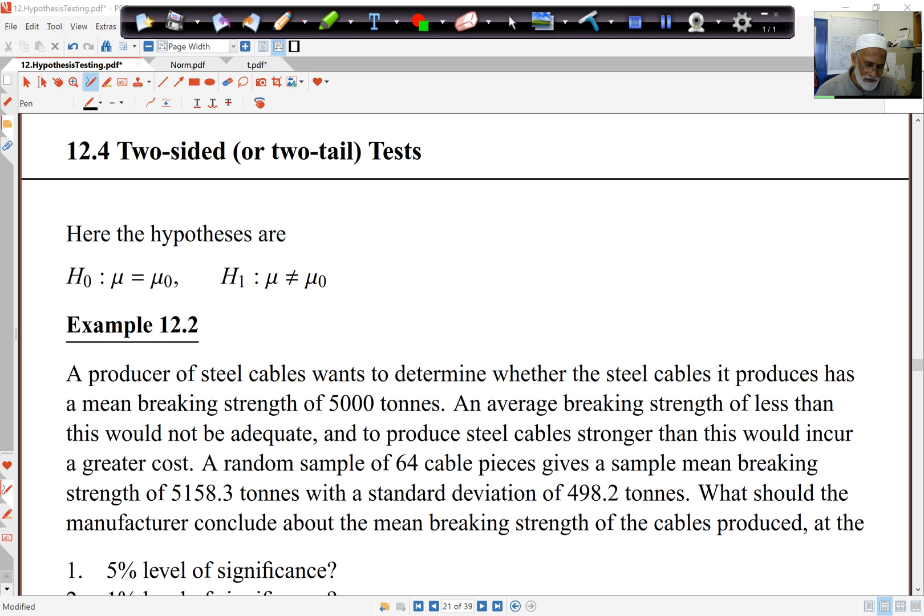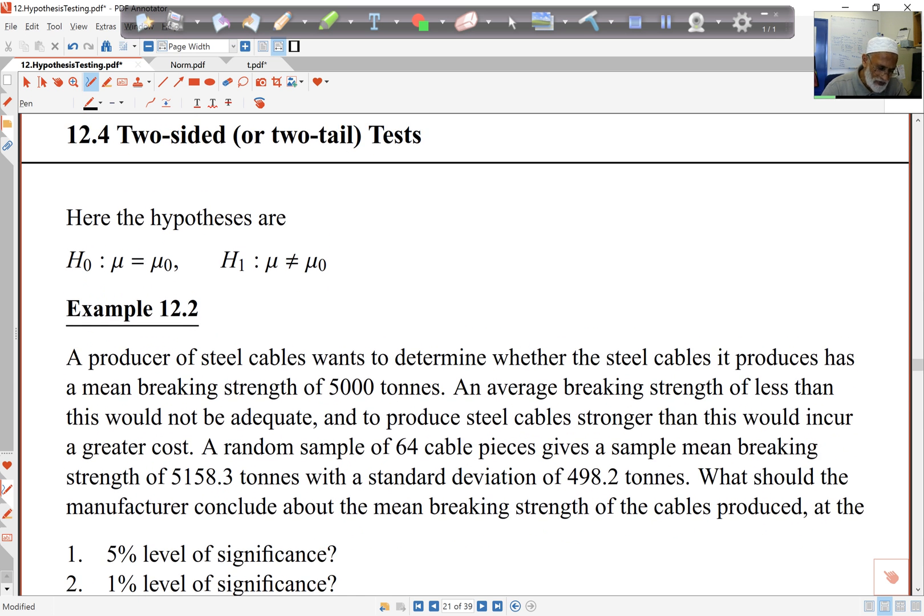Here's another example that will introduce the ideas of two-sided or two-tailed tests. What I've got is the hypothesis will be μ equals μ₀ versus μ not equal to μ₀. So essentially, I'm looking for a p-value here, not just on one side, but on both sides.